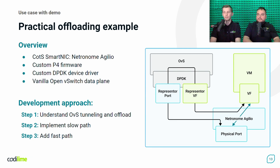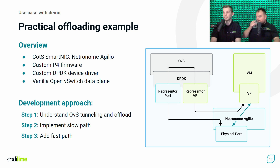This is the high level architecture of our solution showing all the important parts. We have a virtual machine managed by an OVS instance, connected to the rest of its overlay network via a VXLAN tunnel. In our setup we used Netronome Agilio as a smart NIC, programmed with firmware written by us in the P4 language. We used OVS with DPDK drivers. What is worth noting is that we used just open source OVS — we didn't need any customization in it. The only customization needed was in DPDK.